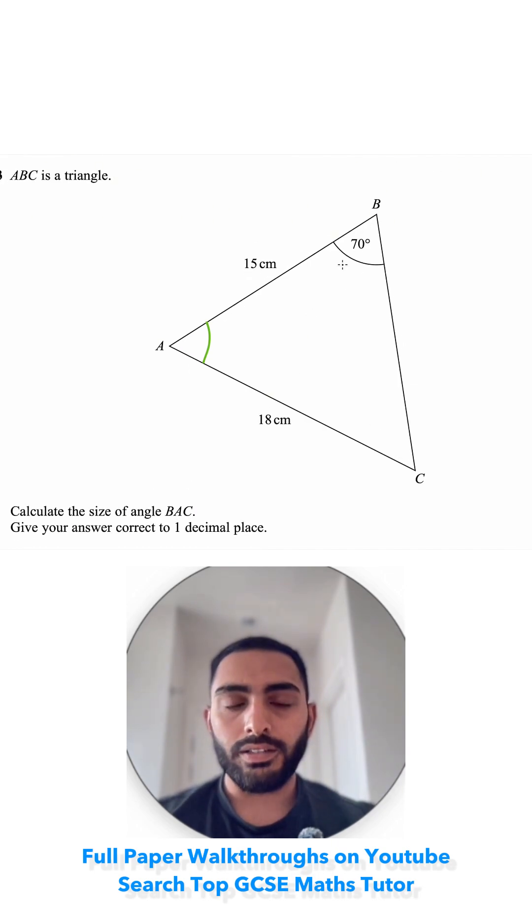The first thing I can see is I've got opposite pairs of information. I've got this side and this angle and this side, but I don't have this angle. That means I can use the sine rule.